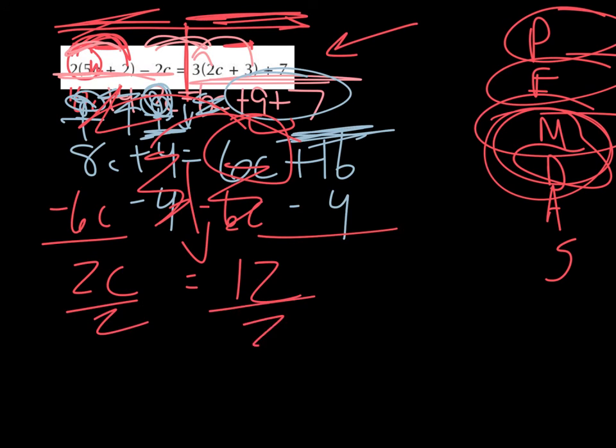Opposite of 2 times c. We divide by 2. And we get our answer c equals 6.